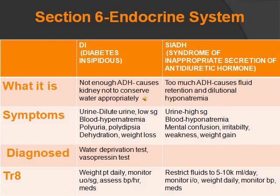Symptoms of DI — too little ADH — include dilute urine and low specific gravity. For the blood: hyponatremia, polyuria (they keep going to the bathroom), polydipsia (they're always thirsty), dehydration, and weight loss because they keep losing fluid.